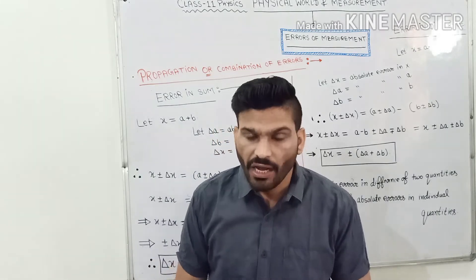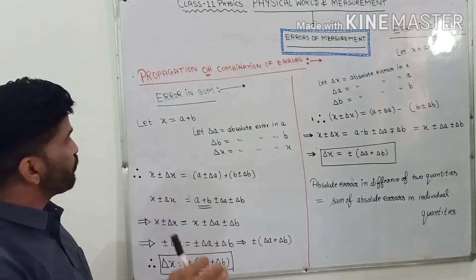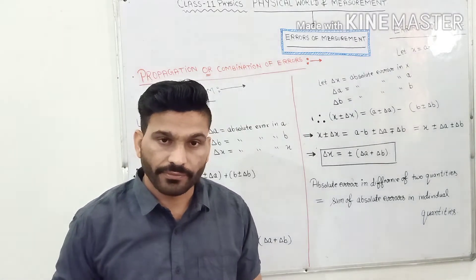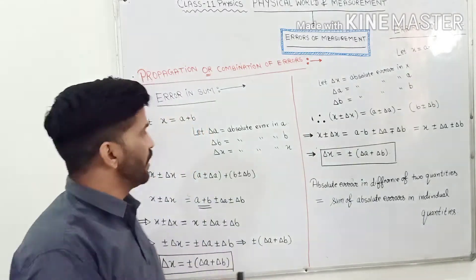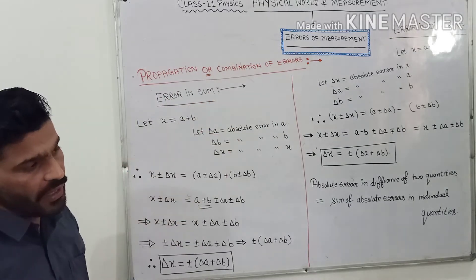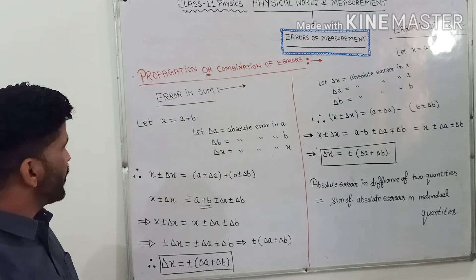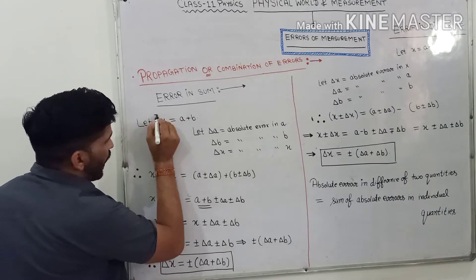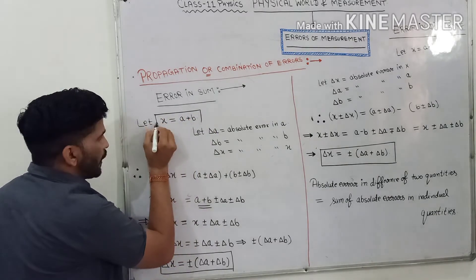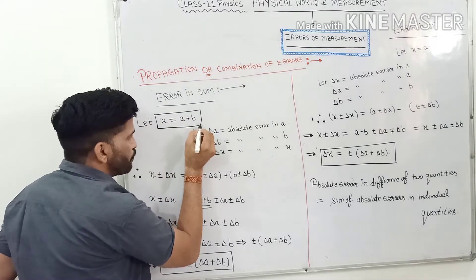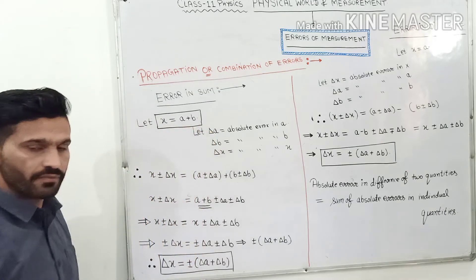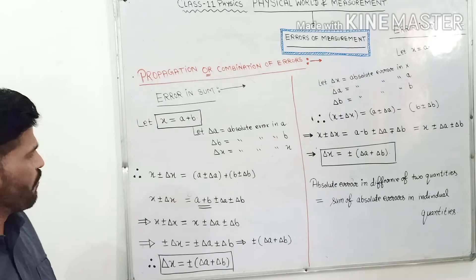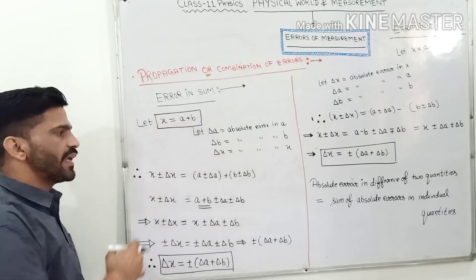Okay students, let's start our article. Today's article is propagation or combination of error. We have a physical quantity. First: error in sum. Let us consider x is equal to a plus b — a plus b — we have one physical quantity which is the sum of two different physical quantities a and b.